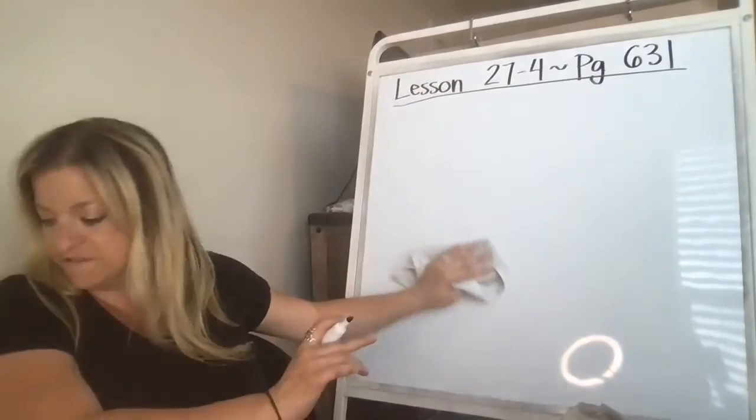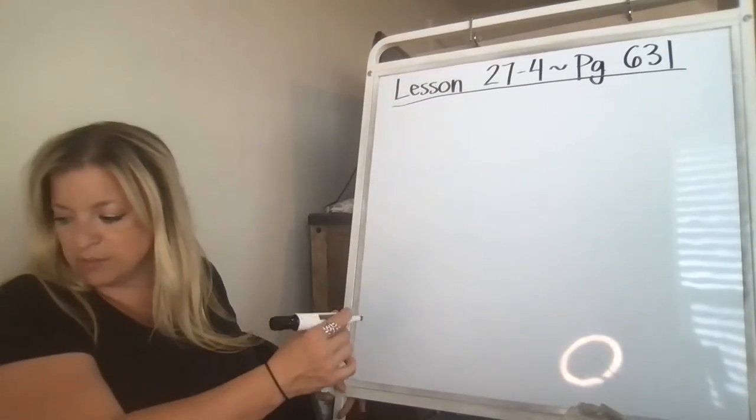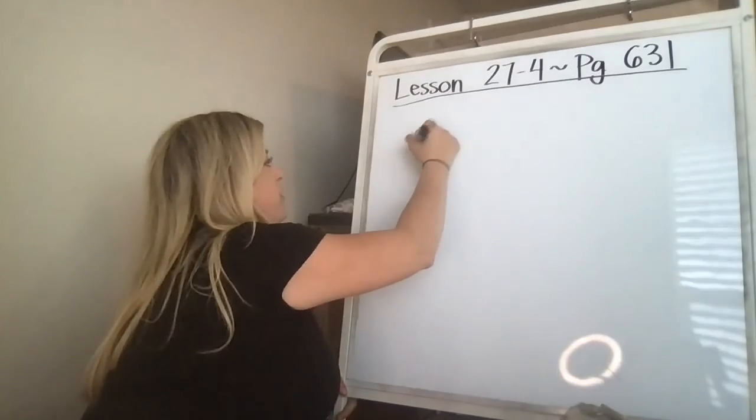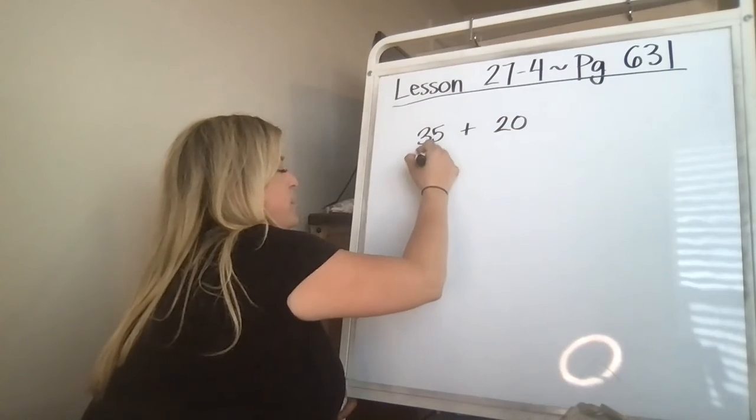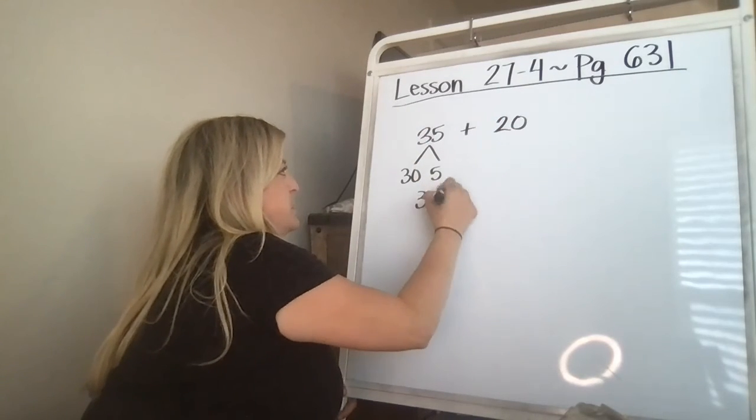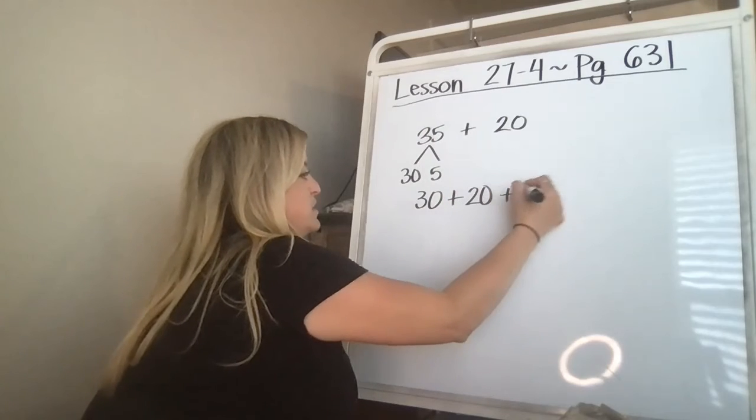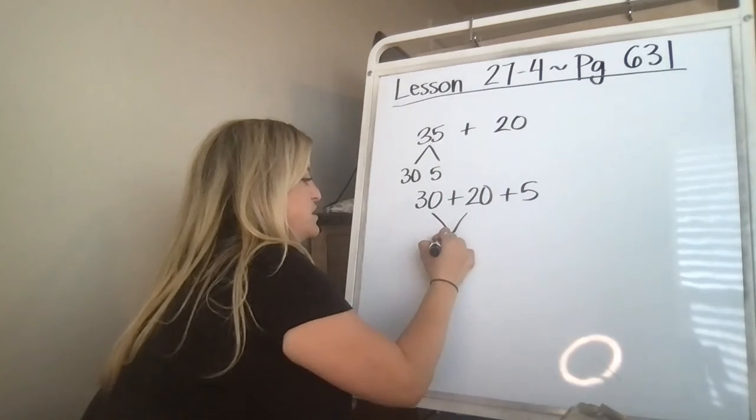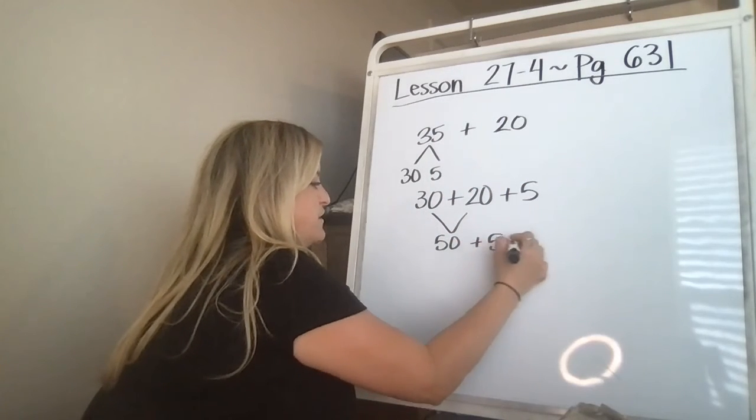Ruby picks 20 apples, Kim picks 35 apples, how many apples all together? 35 plus 20. 35 breaks down into 30 and 5, so it's 30 plus 20 plus 5. 30 plus 20 is 50 plus 5 is 55. So there's 55 apples.